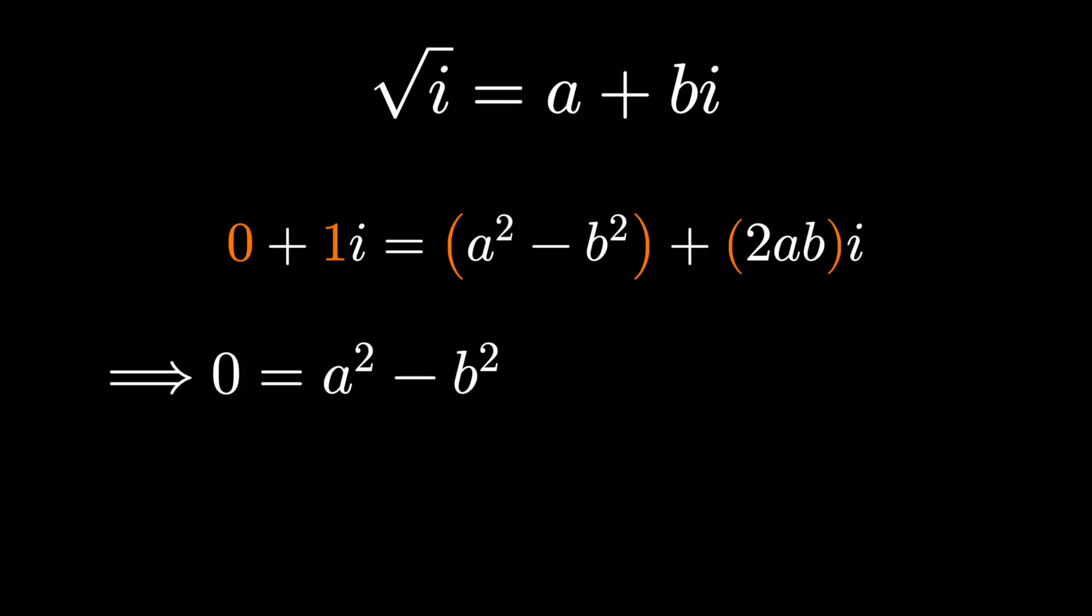Same with the imaginary part of the equation. If 2ab is the coefficient of i on the right, and 1 is the coefficient of i on the left, these have to be equal.